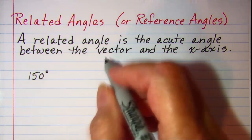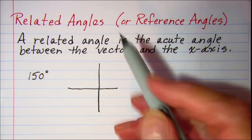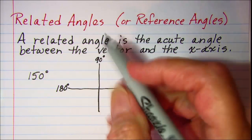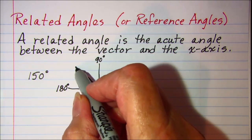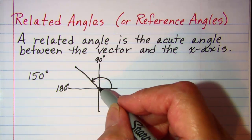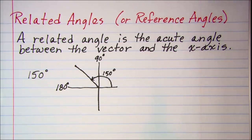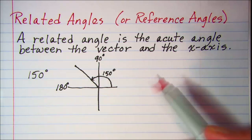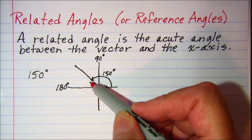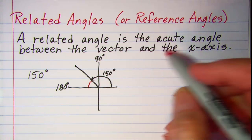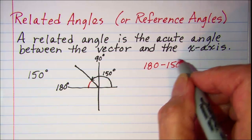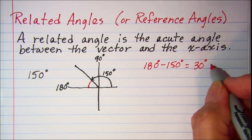If we have an angle of 150 degrees, that is more than 90 degrees but less than 180 degrees, so our vector lies in quadrant 2. The 150 degrees is measured from the positive x-axis to the terminal side of the angle. The reference angle is the acute angle between the vector and the x-axis, found by taking 180 minus 150, giving us a 30 degree related angle.